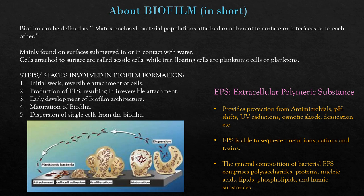The dispersion step completes the cycle. The steps involved are: first, initial weak reversible attachment — if bacteria find the environment favorable, they continue for biofilm formation; otherwise they detach from the substrate. Second is production of EPS, extracellular polymeric substance, which causes the reversible attachment to become an irreversible attachment, so the bacterial load cannot be removed easily. Third is early development of biofilm architecture. Then the biofilm matures, and last is dispersion of single cells from the biofilm.